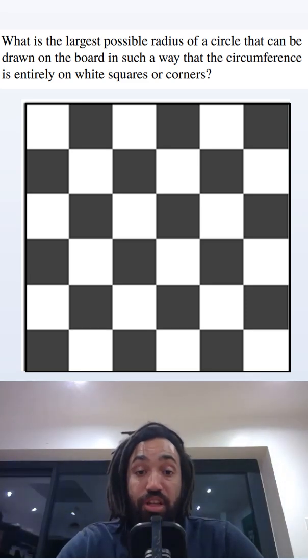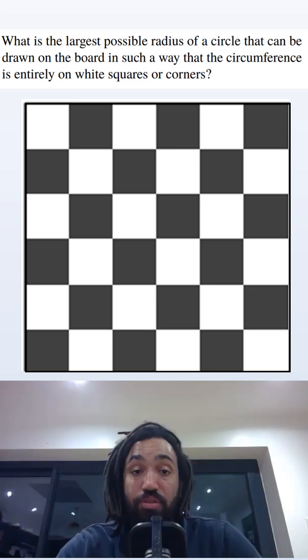Here's an interesting question from the UKMT's Cayley Mathematical Olympiad 2019. What is the biggest possible radius of a circle which can be drawn on a chessboard in such a way that the circumference is only on white squares or corners? Give this problem a try and here is the solution.